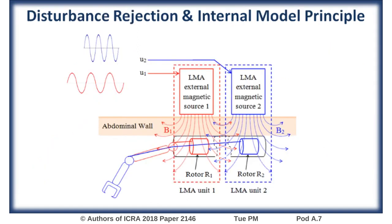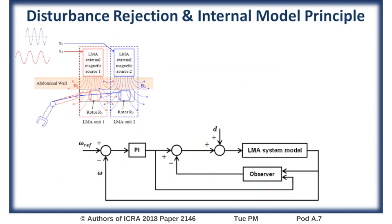Although only partial information of the interference signals is known, such as the waveform but not the amplitude, a disturbance model can be obtained. We can then use the Internal Model Principle, IMP, to reject the effect of the interference.